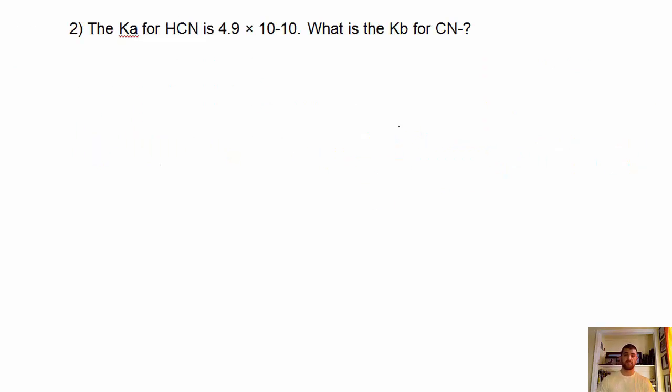Two is just similar to number one. They give us Ka. They want Kb. We know, well, Ka has to equal the Kw over the Kb. So it's just a plug and chug. 10 to the minus 14 all over the Kb, which is, actually, I mixed these two up, right?